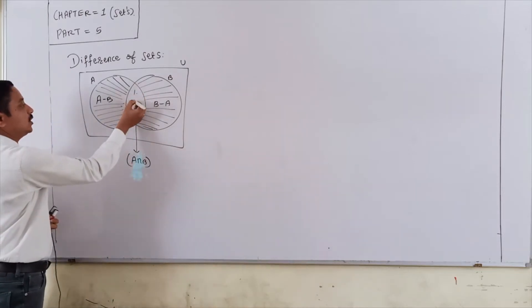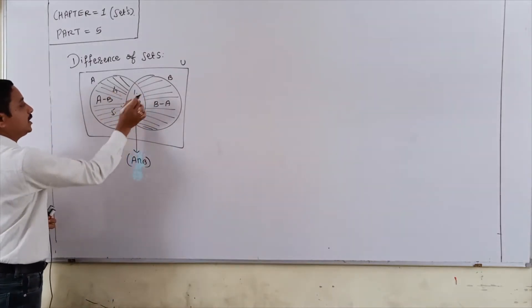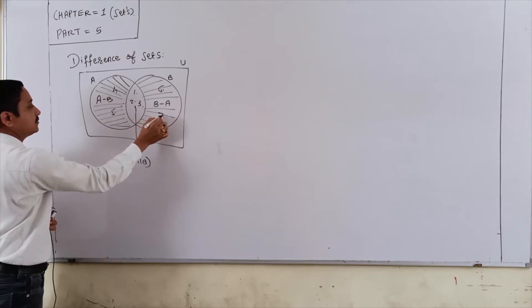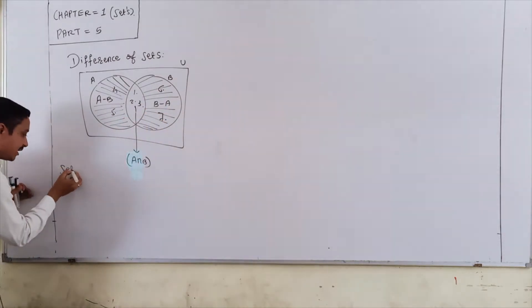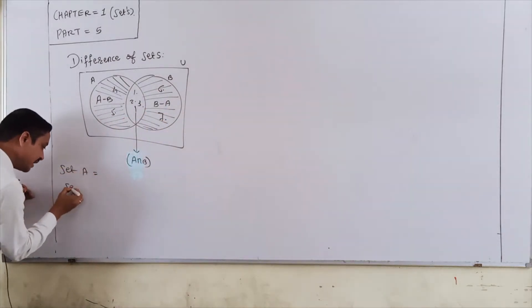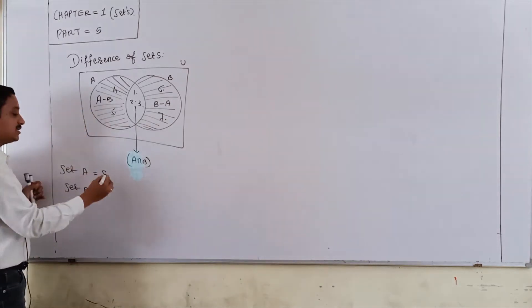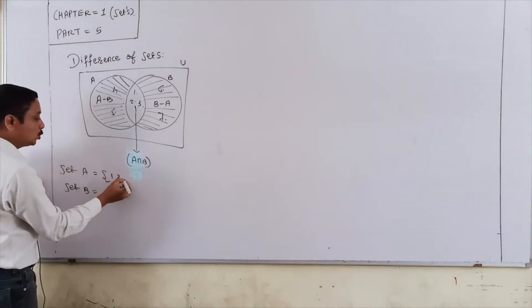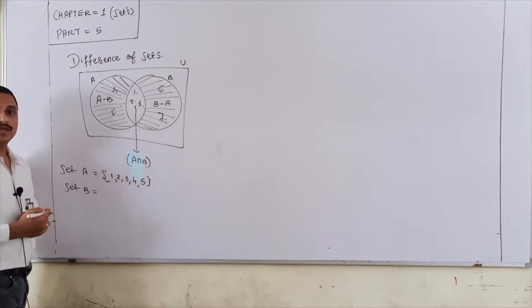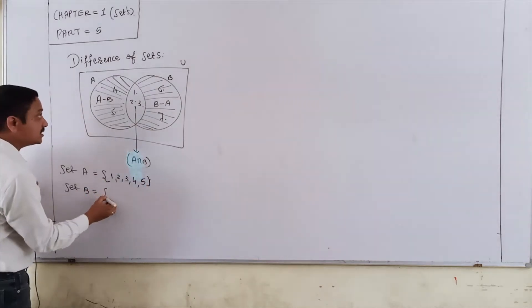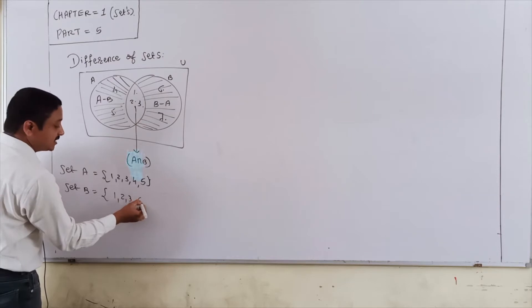Just consider here 1, 2, 3 numbers, here 4, 5 and here 6, 7. So you're getting set A and set B. Set A is 1, 2, 3, 4, 5 and set B is 1, 2, 3, 6 and 7.